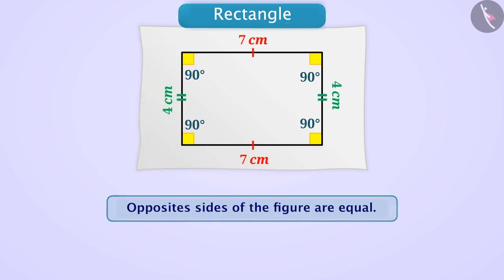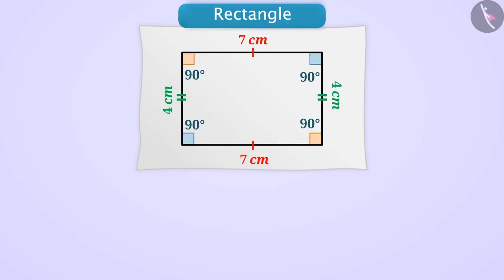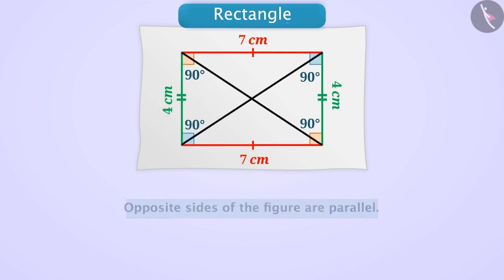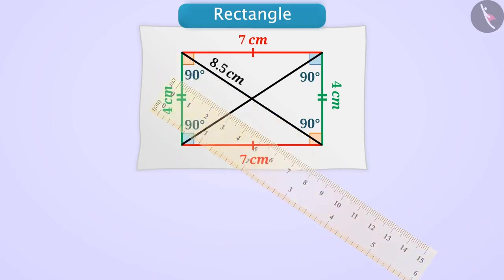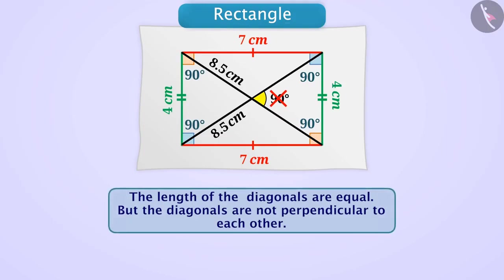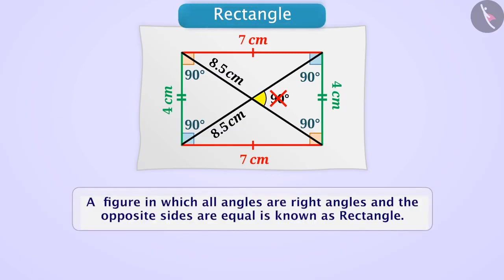We can also observe that opposite angles are equal and they are right angles. Since there is equal distance between the pair of opposite sides, opposite sides of this figure are parallel. If we make two diagonal lines and measure their length, we will find them to be equal, but they do not intersect each other at 90 degrees, meaning they are not perpendicular. We call this figure a rectangle — a figure in which all angles are right angles and the opposite sides are equal.